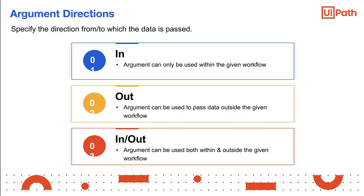Argument direction tells the application where the information stored in them is supposed to go. That is to say, it specifies the direction from or to which the data is passed. The directions are: in, representing the argument that can only be used within the given workflow; out, meaning the argument can be used to pass data outside of a given workflow; and in and out, meaning the argument can be used both within and outside of a given workflow. Argument names should be prefixed for easy identification of the argument direction, such as in_file_name, out_text_result, and io representing in and out, retry_number.